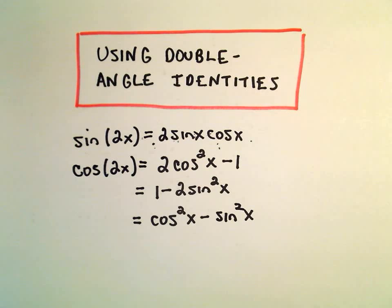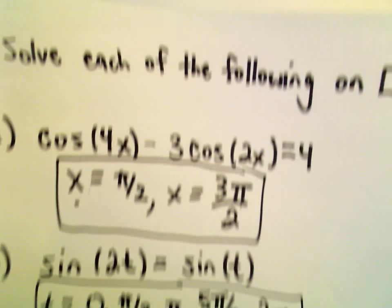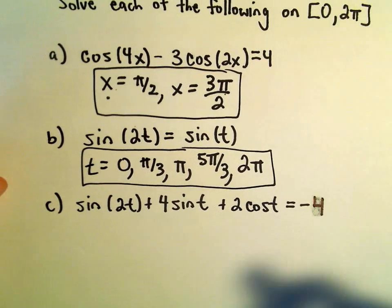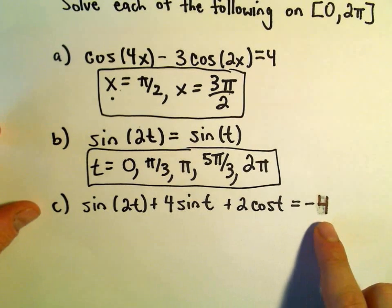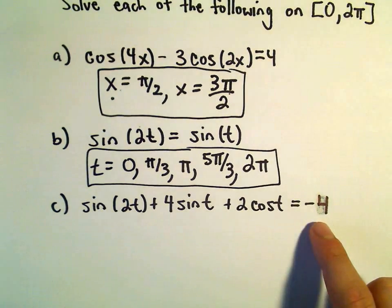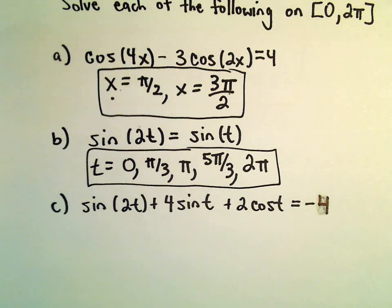Okay, so one more example here of using a double angle identity to solve an equation. So you may have actually noticed, I changed this problem a little bit because I think it was actually a little tricky the way it stood.